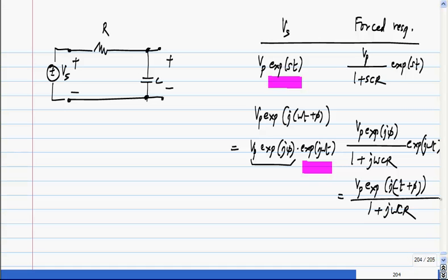some complex number. And finally, for Vp cos(ωt + φ), what is the response? The real part of this.